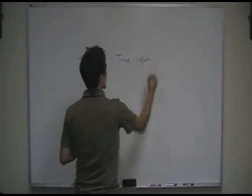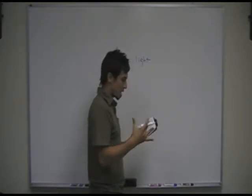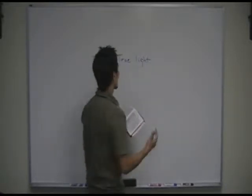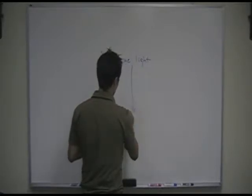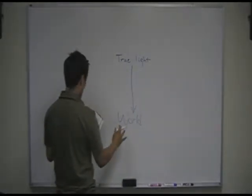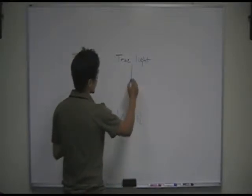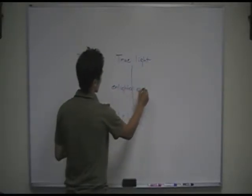So the true light has its origin, it seems, outside of the world because it tells us that it's coming into the world. Coming into the world, it says that he is going to enlighten every man. So the purpose of the true light is to enlighten every man.